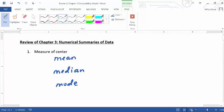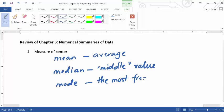So mean is your average, arithmetic average. Median is the middle value. If you arrange your data in ascending or descending order, it's the value that sits right in the middle. And mode is the most frequent, if there's any.